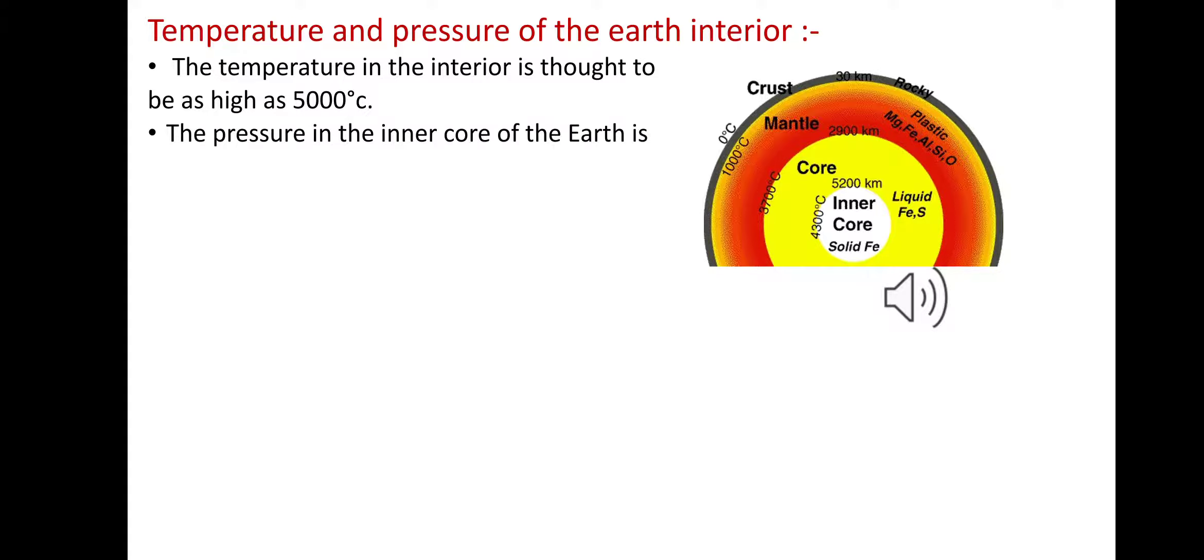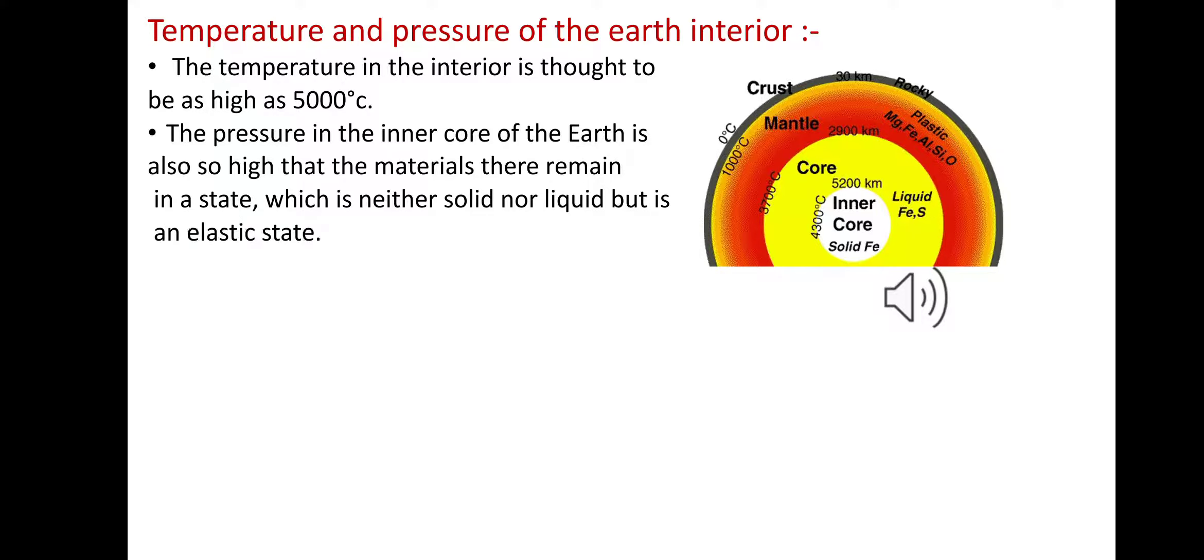In this temperature nothing can remain in solid state. The pressure in the inner core of the Earth is also so high that the materials remain in a state which is neither solid nor liquid, but in an elastic state. The Earth's outer surface becomes cool and solid, but the interior is still tremendously hot.